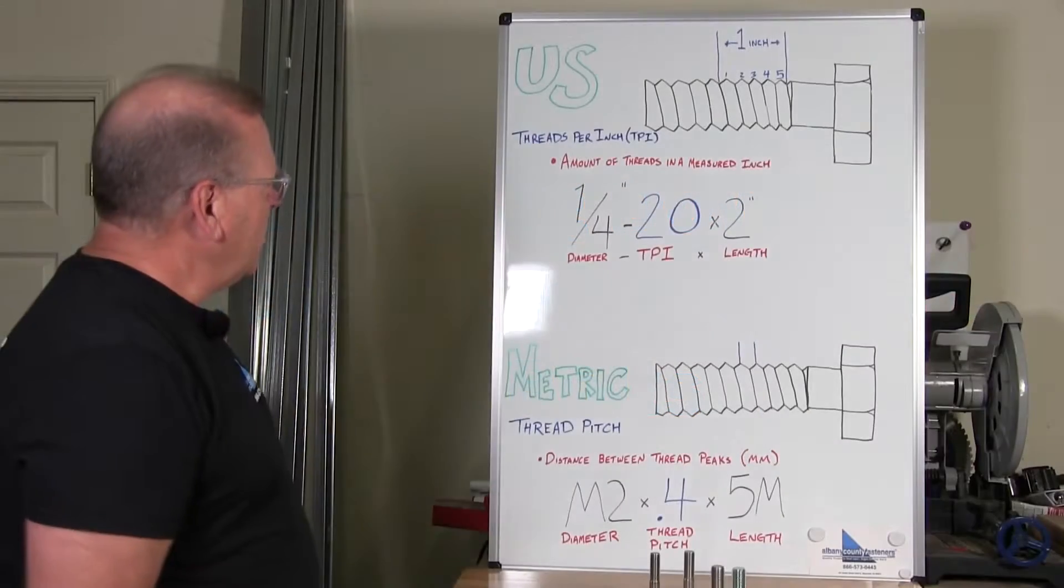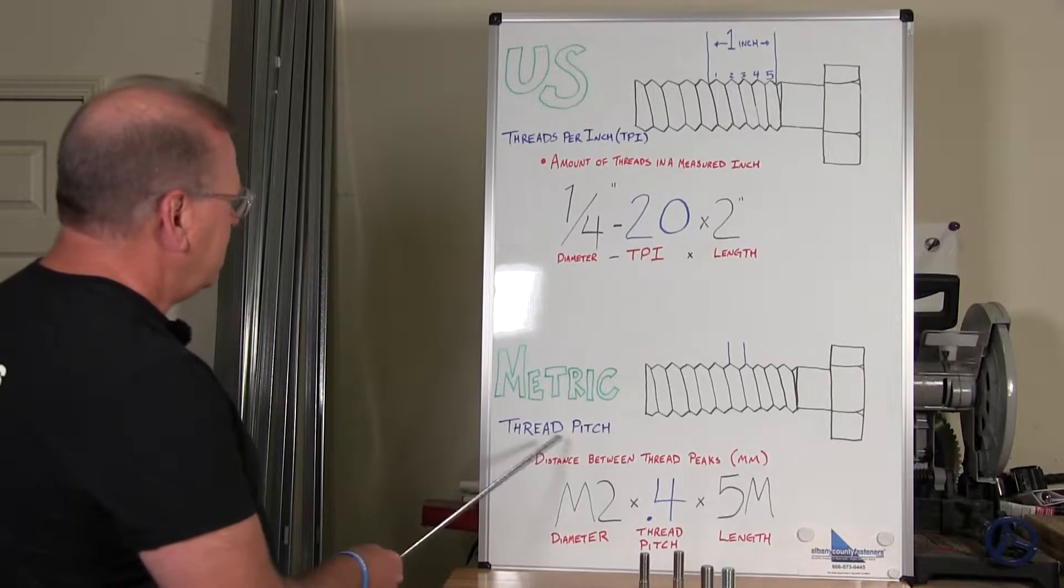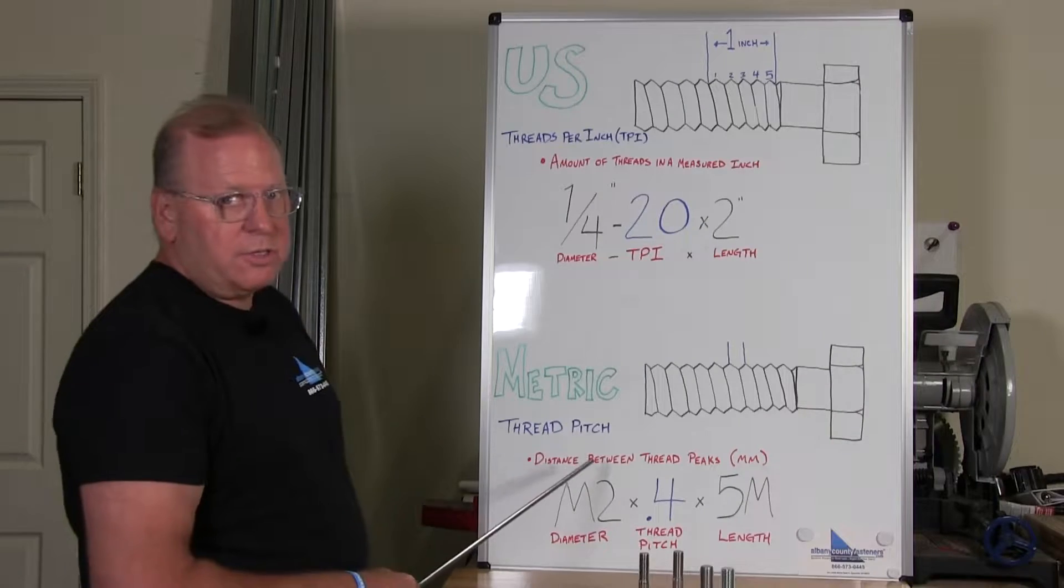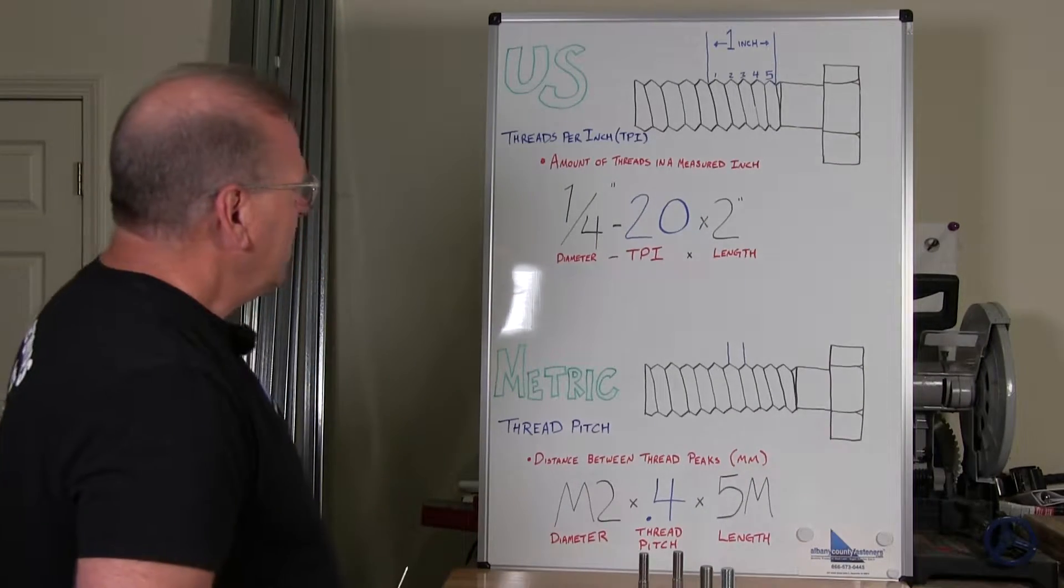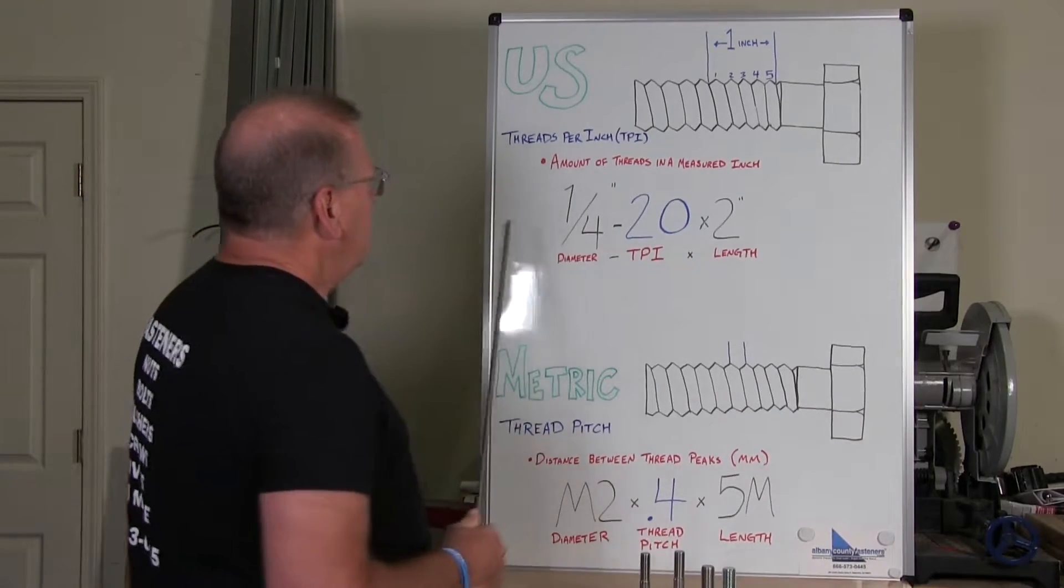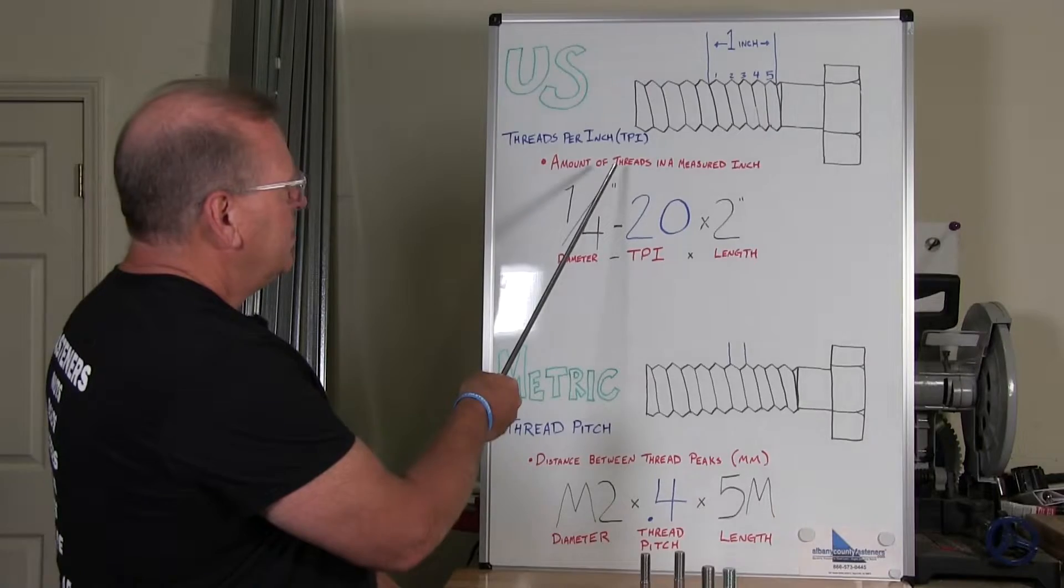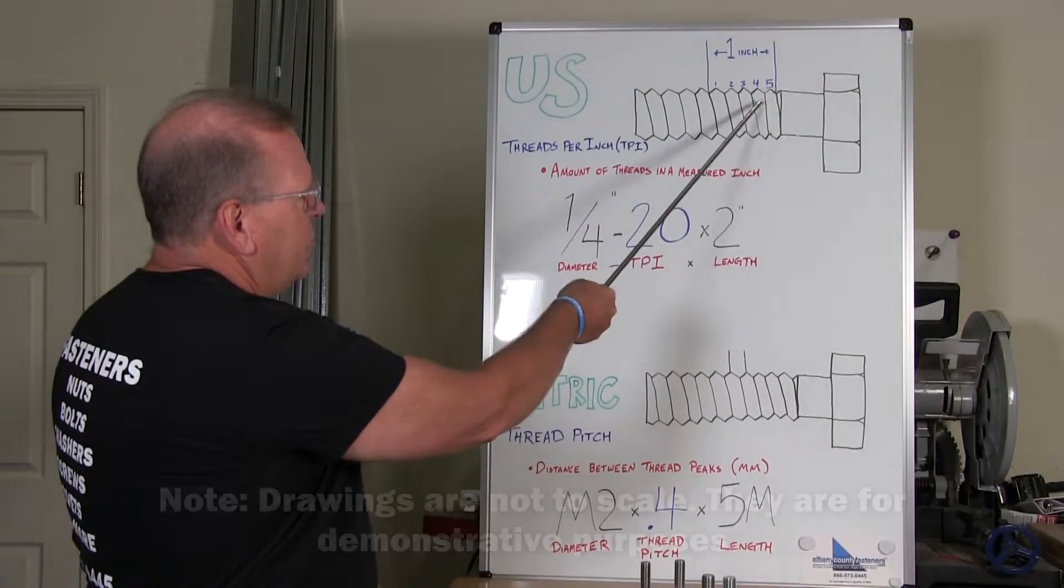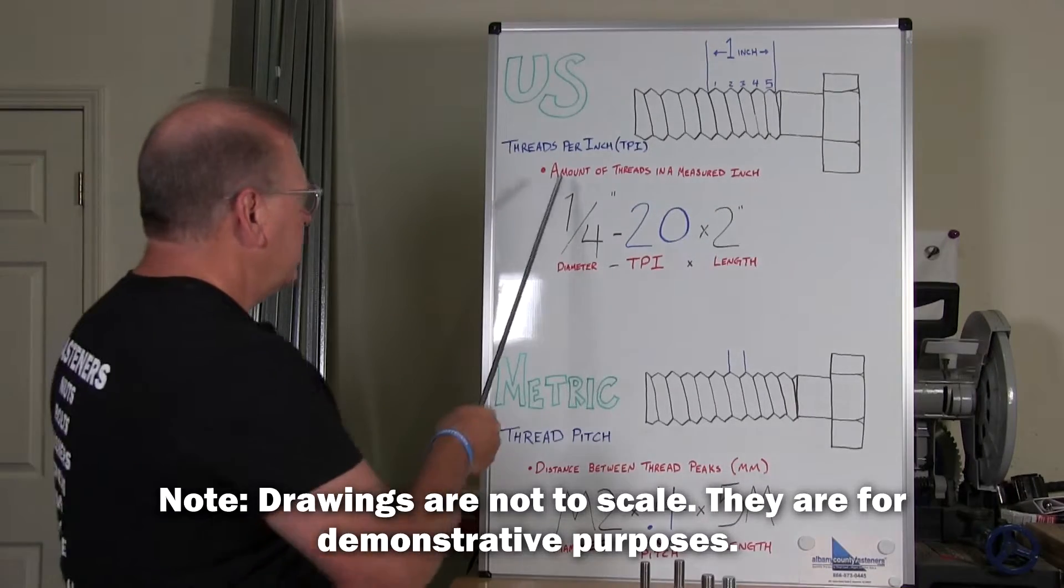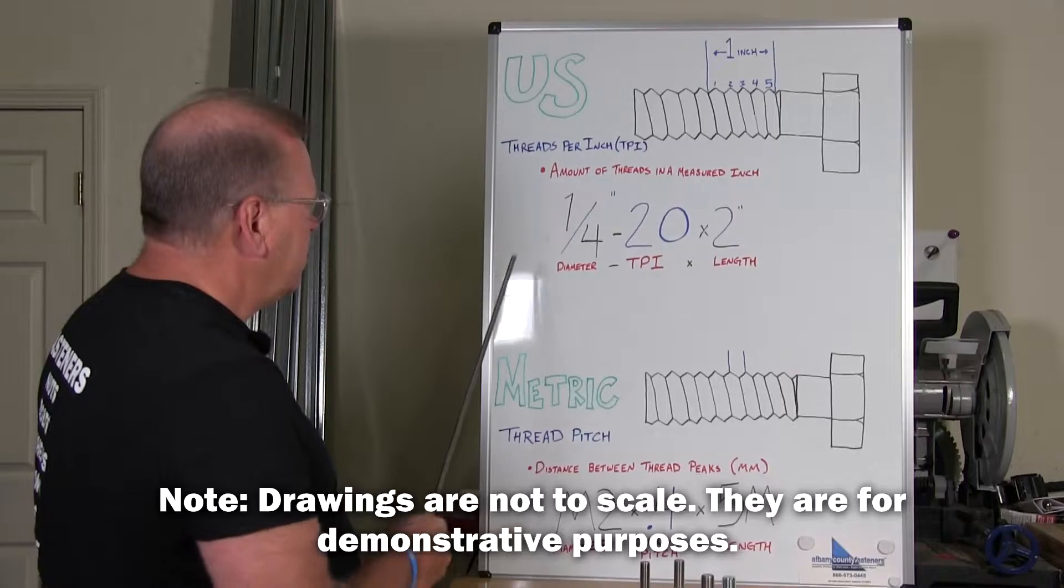What this board will show you is the difference between US threads per inch and metric thread pitch. Two different things. So when you're addressing a US bolt, it's threads per inch. So you measure an inch, you count the threads in that inch and that's the threads per inch. It's the amount of threads that are measured in one inch.